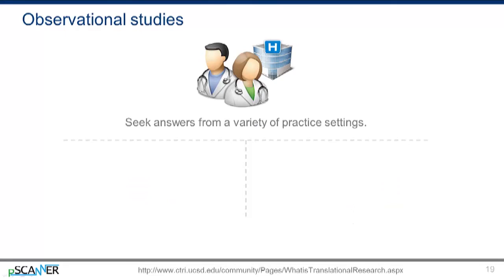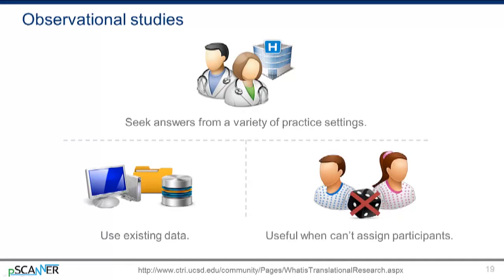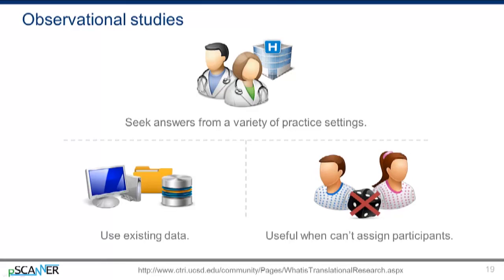Observational studies seek answers from a variety of practice settings. These studies rely on information that was already collected during regular health care from electronic health records or registries, or they simply track what outcomes occur when regular practices are followed. There's no assignment of people to treatments or interventions. This design is useful when researchers can't assign participants to treatment or control groups for practical or ethical reasons. For example, we might want to understand how a tax increase on cigarettes impacts smoking rates among adolescents in one city — it wouldn't be practical to levy a tax in one part of town and not another, nor would we randomly assign some adolescents to buy cigarettes with or without the tax. The best design is simply to observe what happens after the tax is imposed.